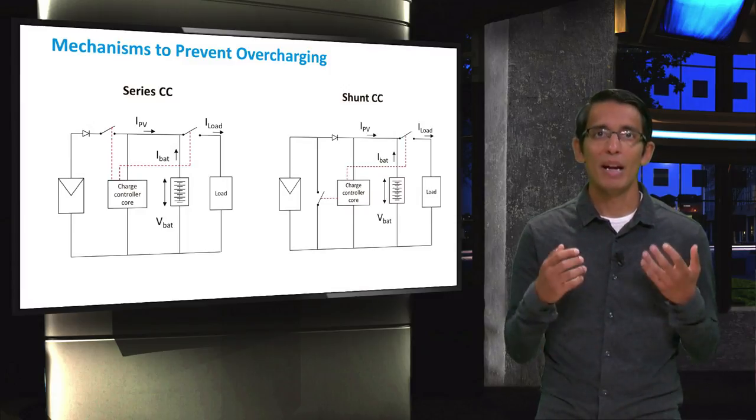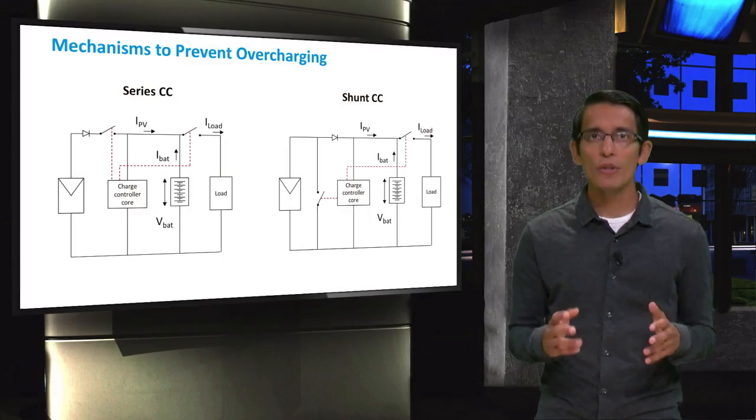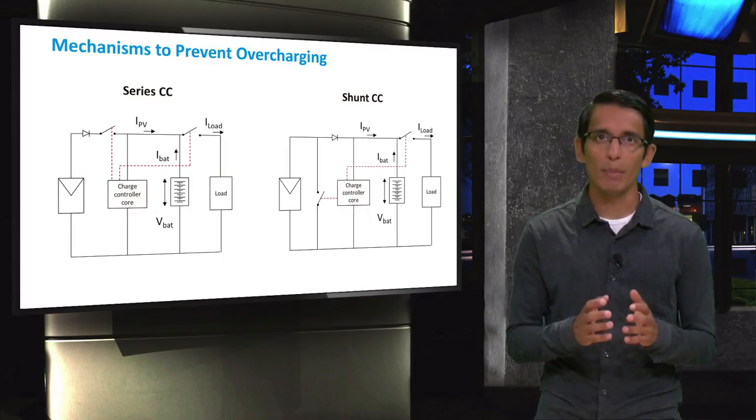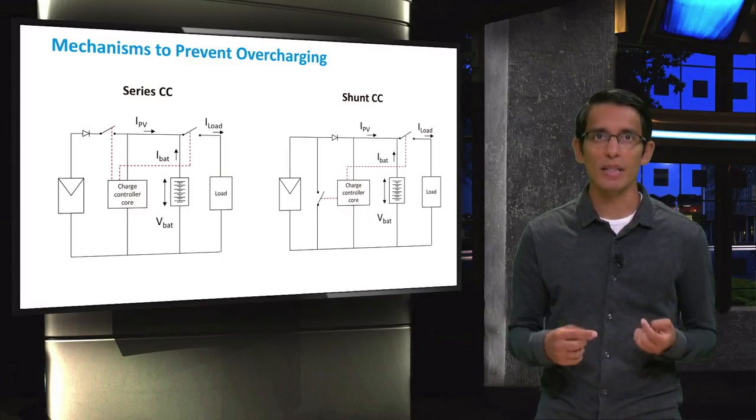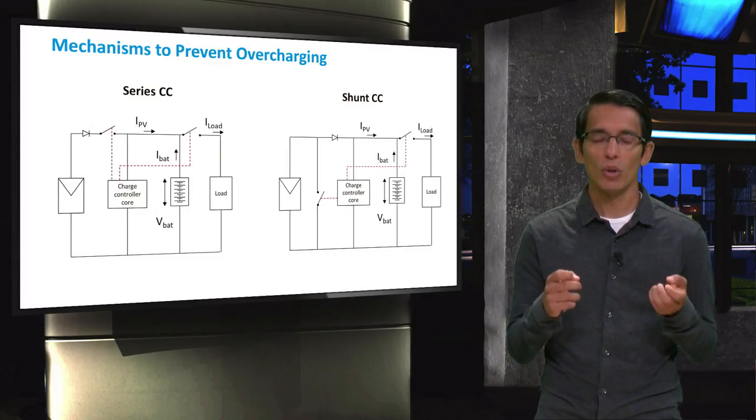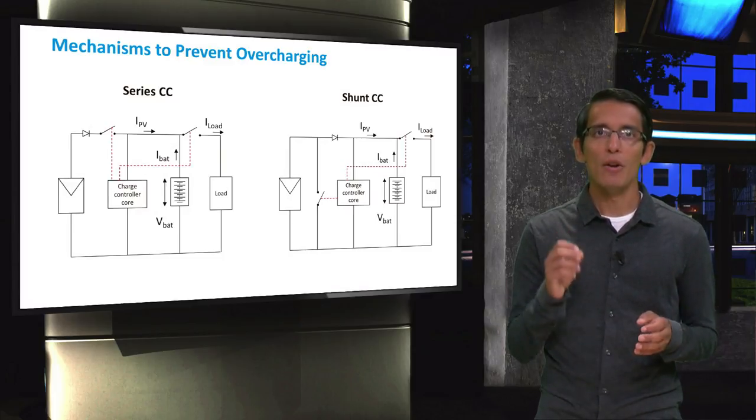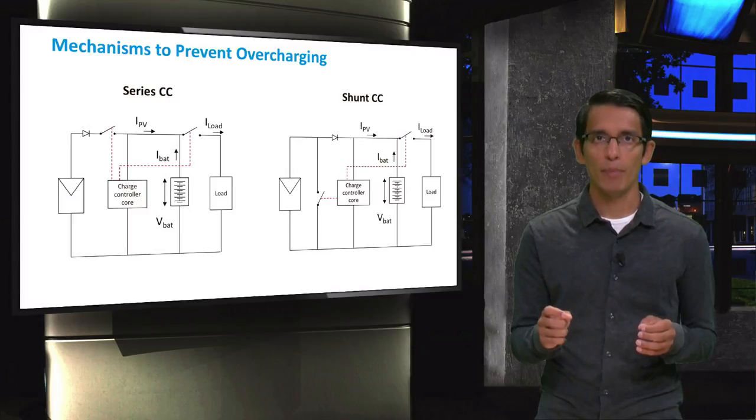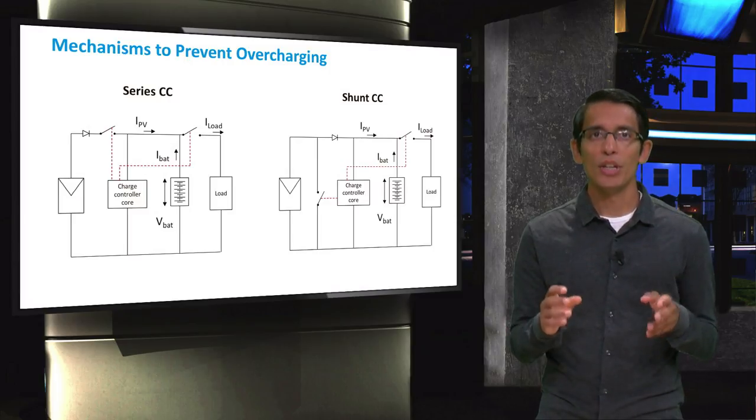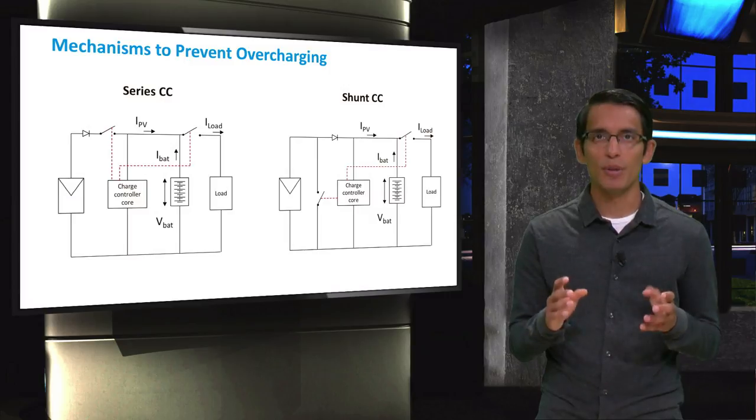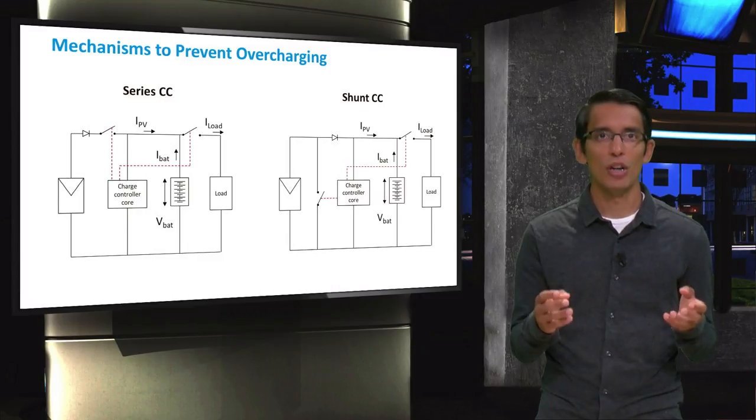On the other hand, in a parallel or shunt controller, overcharging is prevented by short-circuiting the PV array. This means that the PV modules will work in short-circuit mode and that no current will flow into the battery. Both of these topologies also ensure over-discharge protection. This is achieved by power switches for the load connections, which are appropriately controlled by the charge controller algorithms.